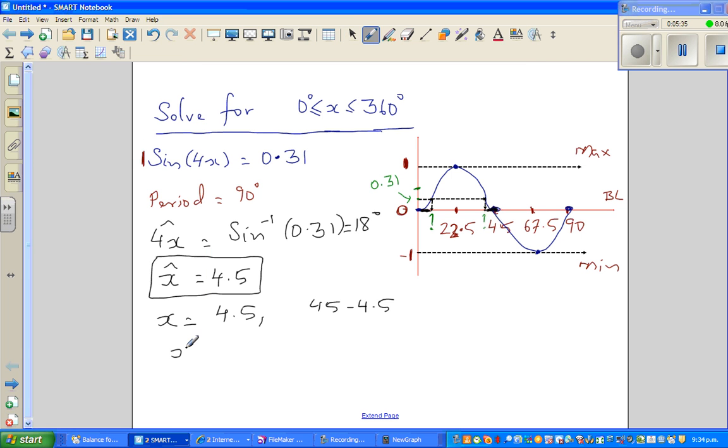So within 90 degrees, you have 4.5 and 40.5. But the question is, you want all the x's between 0 to 360. So now to get the other x's, you have to simply add 90 to this, because this will be repeated every 90 degrees, because the period is 90 degrees. So the next answer would be plus 90 would be 94.5, plus 90 is 130.5.